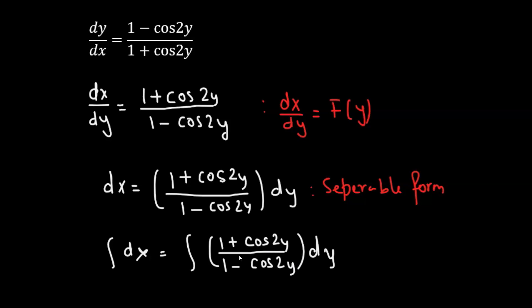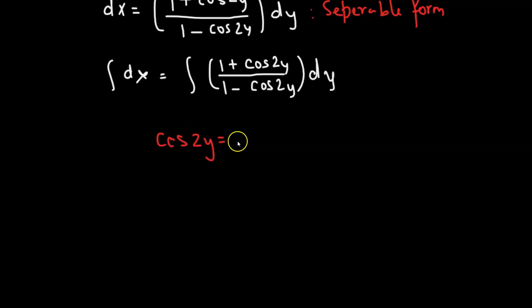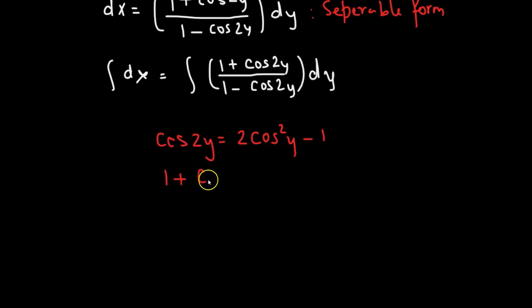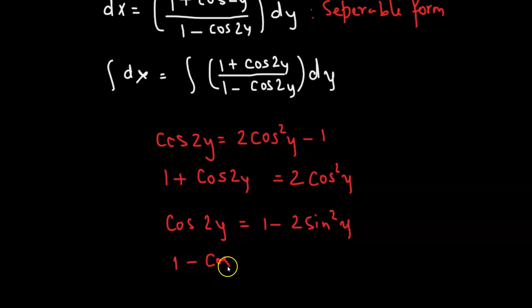In order to integrate the rational function on the right hand side, we need to use the identity that cosine of 2y equals 2 times cosine squared y minus 1. So that means 1 plus cosine of 2y gives us 2 times cosine squared y. We also know that cosine of 2y equals 1 minus 2 times sine squared y, so 1 minus cosine of 2y becomes 2 times sine squared y.